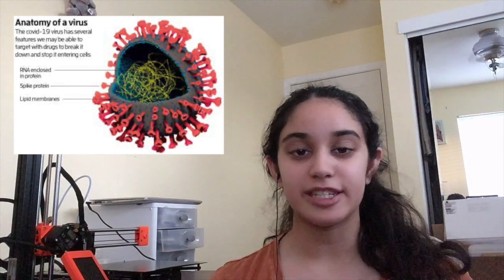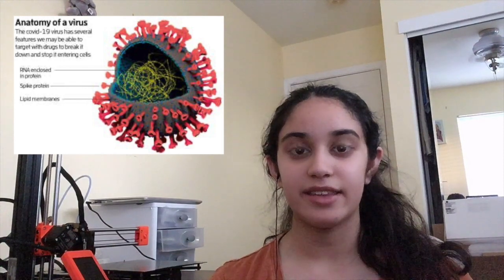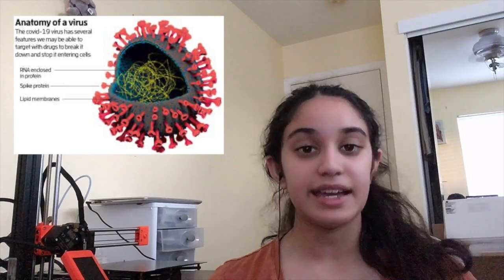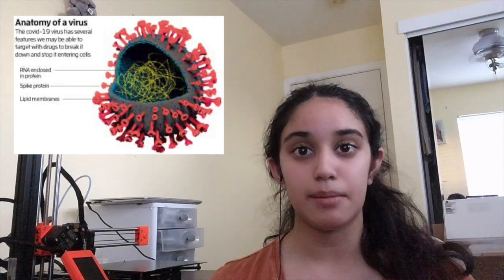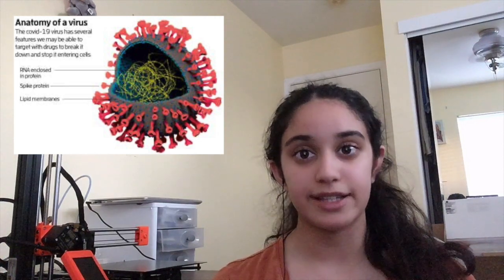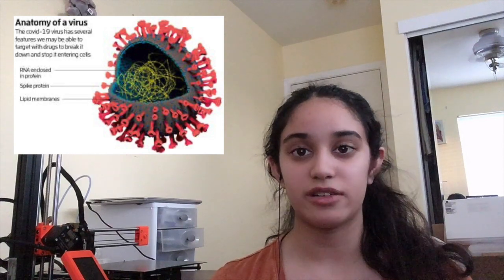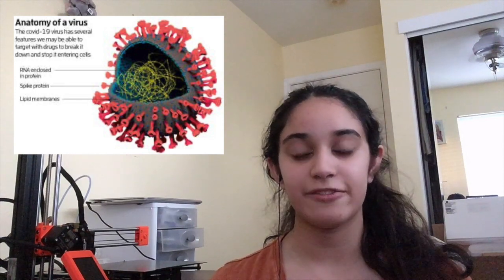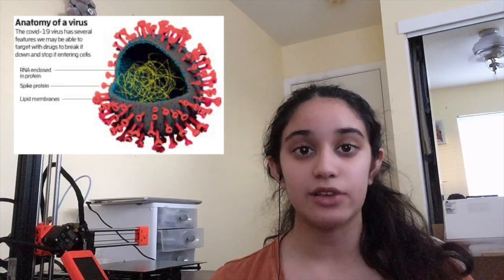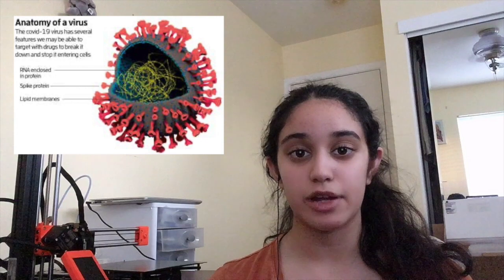These spike proteins are what allow the COVID-19 virus to attach to the human body and infect the person. As the body is being infected, the virus uses spike proteins to latch onto the human's immune system, integrate the lipid membrane into the contents of the human body, and empty its RNA into the body's systems in order to replicate itself. This allows COVID-19 to spread rapidly and continue to infect various parts of the body.